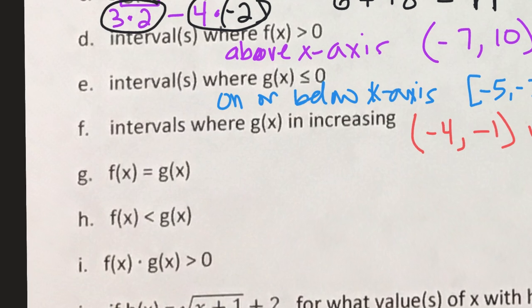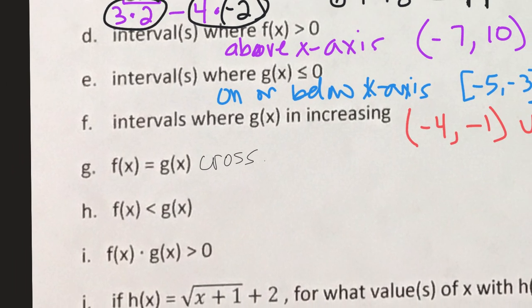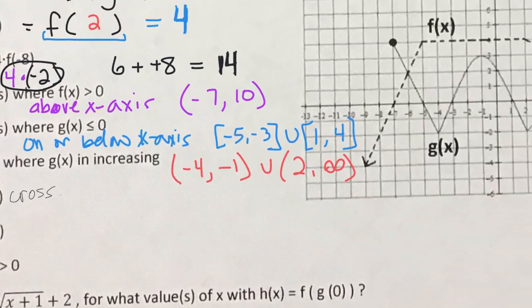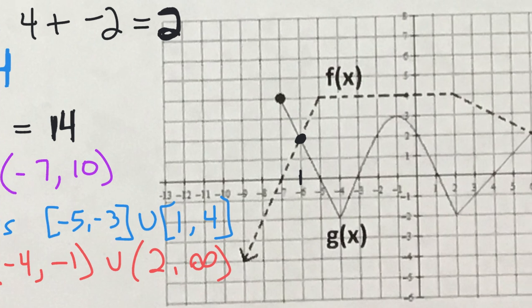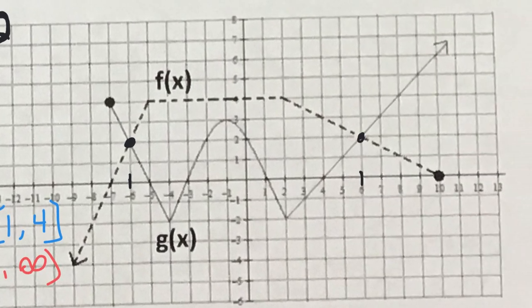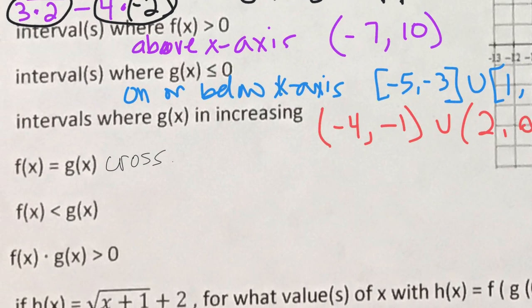Where are the two graphs equal? That's where the graphs cross, which gives exact x-values. The graphs are equal when x equals negative 6 and when x equals positive 6. We're only listing x-values here, not writing them as intervals — so just a list: negative 6 and positive 6.